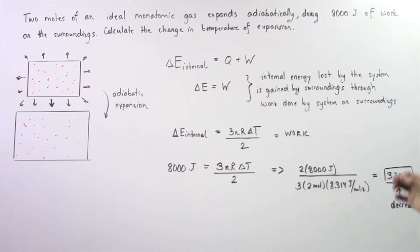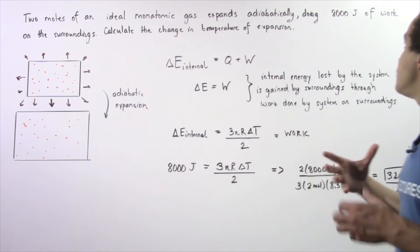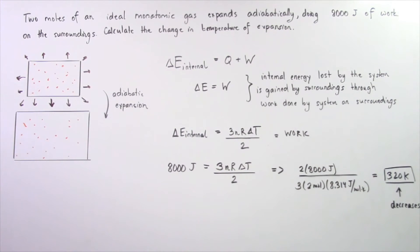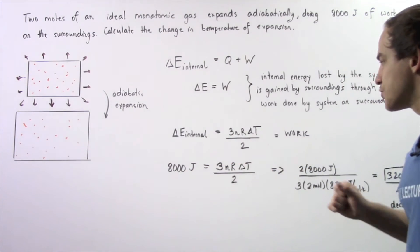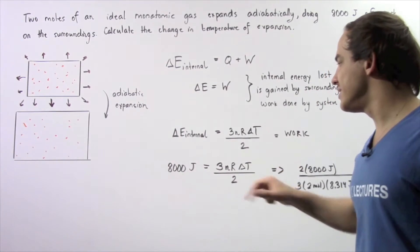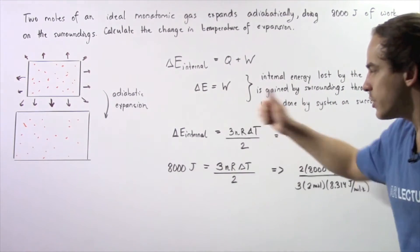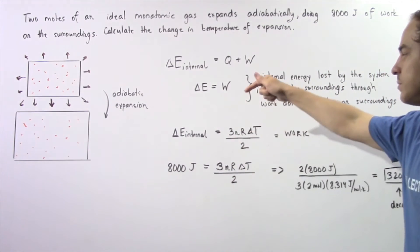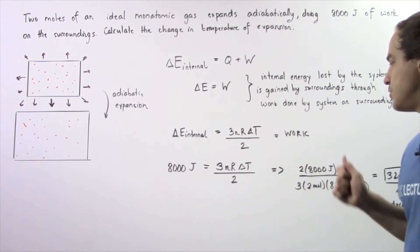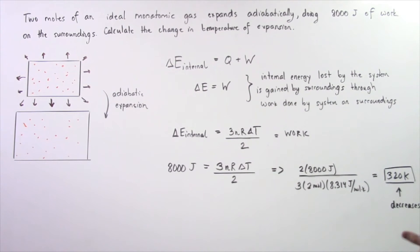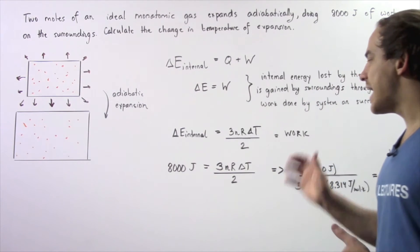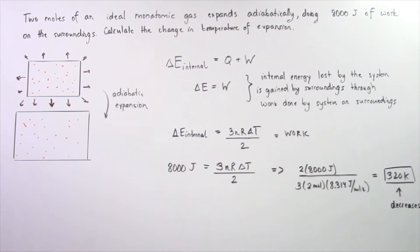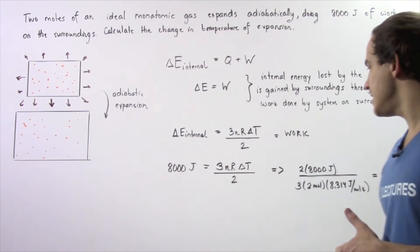Because our expansion does 8,000 joules of work on the surroundings, our work equals 8,000 joules. So 8,000 joules equals 3 multiplied by N multiplied by R multiplied by change in T divided by 2. We rearrange our equation, plug in our knowns, and solve for the change in T.